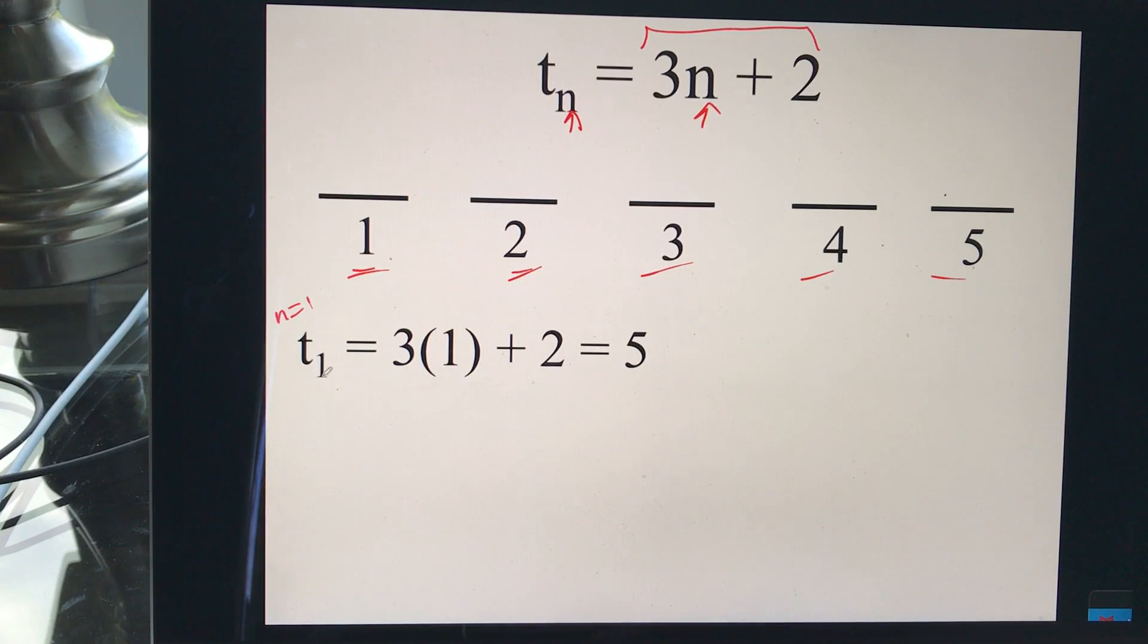So t1, t subscript 1, first term, is 3n plus 2. So I'm going to do 3 times 1, which is 3, plus 2. 3 plus 2 is 5. So my first term, the value of my first term in position 1 is 5. So this is the value of the term, and this is the position down here. That's what we're talking about.